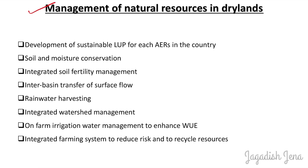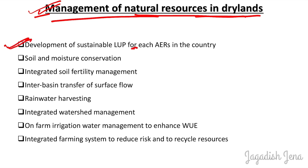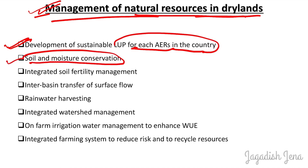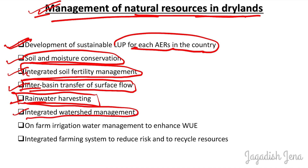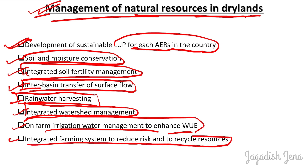For management of natural resources in dryland development, the following practices should be adopted: development of suitable land use planning for each agroecological region; soil and moisture conservation practices; integrated soil fertility management; inter-basin transfer of surface flow; rainwater harvesting for storing rainwater for off-season cultivation; integrated watershed management programs; on-farm irrigation water management to enhance water use efficiency; and integrated farming systems to reduce risk and recycle resources.